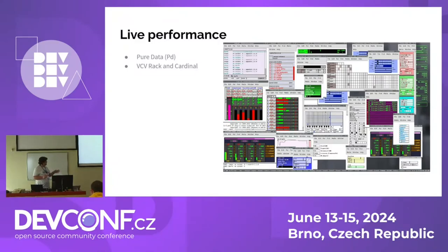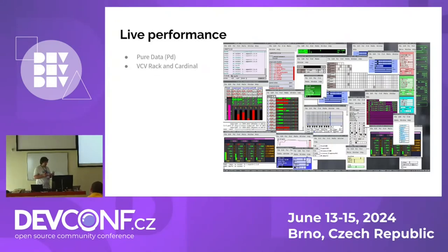One example of what people have done with digital signal processing is oscilloscope music. There's someone named Jerobim Fenderson who created famous oscilloscope music where the music is specifically composed to create images on an oscilloscope, hooked up with the left channel in one input and the right channel in another. It creates beautiful graphics while also sounding interesting — it's hard to do and involves 3D modeling.